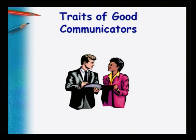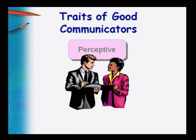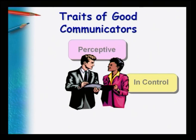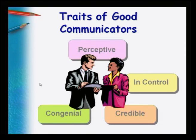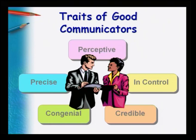Good communicators are perceptive — they are good listeners and perceive both verbally and non-verbally. They are in control, meaning their emotions are in check and they can control their verbal and non-verbal behavior. They are credible — you can trust and believe them. They have created rapport; they are congenial, approachable, friendly, and affable, so you feel like sharing your ideas without inhibitions. And they are precise — they do not bore you, they talk precisely, convey their points exactly, do not mince words, and do not beat around the bush.